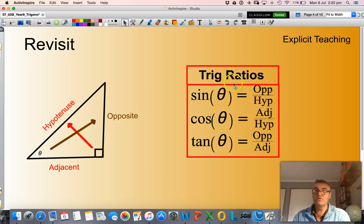And also the trig ratios, those being sine theta equals the length of the opposite divided by the length of the hypotenuse. Cos theta, which equals the length of the adjacent divided by the length of the hypotenuse. And tan theta, which equals the length of the opposite divided by the length of the adjacent.